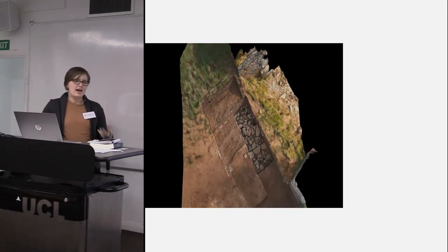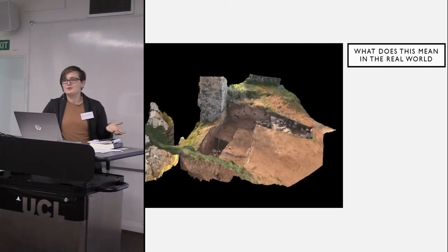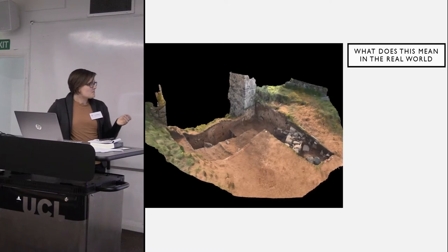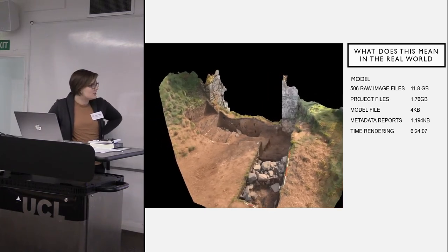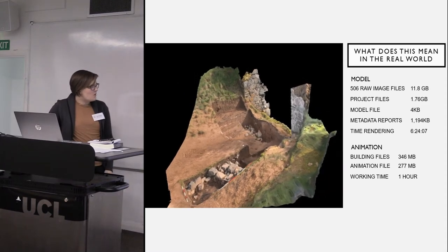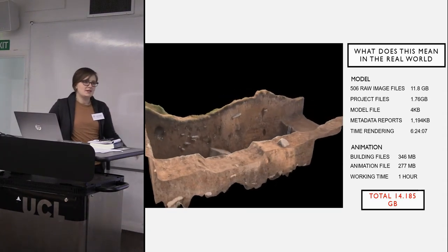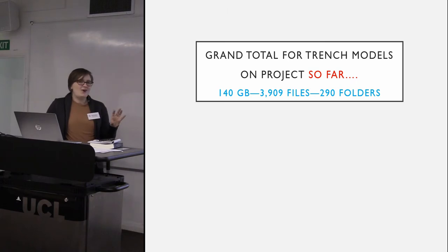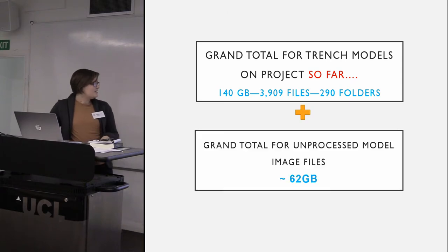But I think there's a huge gap in the discussion of 3D modeling, and that is: what does this mean in the real world? I actually broke it down, and I was sort of terrified when I did it. This model has 506 raw image files, and including the animation, that's a grand total of a little over 14 gigabytes of data - about an iPod worth of data. On the project so far, we have 140 gigabytes total, and that's not including the unprocessed image files - that's another 62 gigabytes.